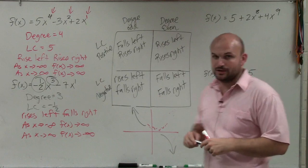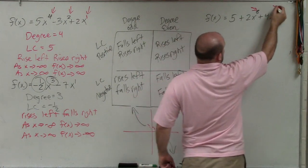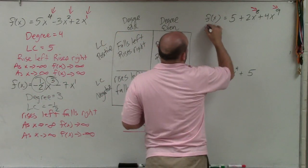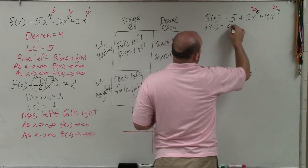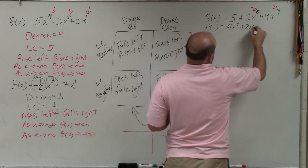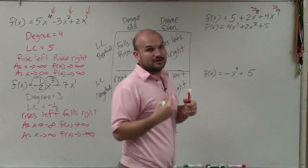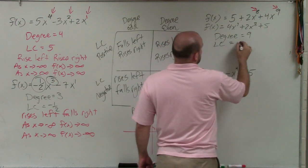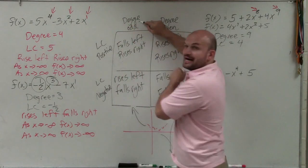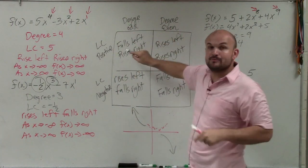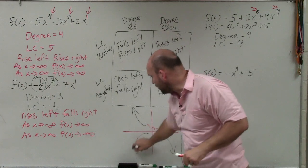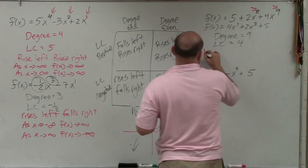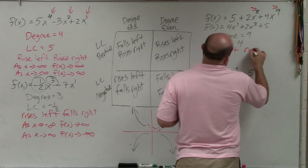The next example is not in descending order — the only powers are 8 and 9, and they're not from largest to smallest. So I rewrite it as f of x equals 4x to the 9th plus 2x to the 8th plus 5. Now it's in descending order. My degree is 9 and my leading coefficient is 4. The degree is odd and the leading coefficient is positive, so my graph falls left and rises right.